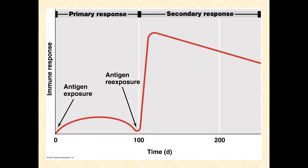This graph here is nice because it shows you how intense a secondary response can be. This is whether your primary exposure is due to a vaccine — an artificial response — or it's due to an actual infection. On the left you've got the magnitude of the immune response, and on the x-axis you've got time. The initial antigen exposure let's say happened at zero days, and there's an immune response.